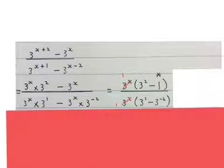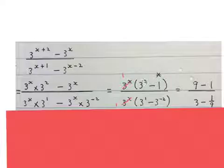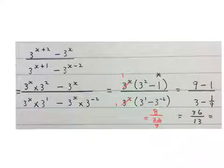Then we simplify this. 3 to the power of 2 becomes 9, keep the minus 1. 3 to the power of 1 stays 3 and 3 to the power of minus 2 becomes a 9th. Then I simplify these two separately. If you simplify this fraction, you end up with something like this, but then the final answer will be 36 over 13.